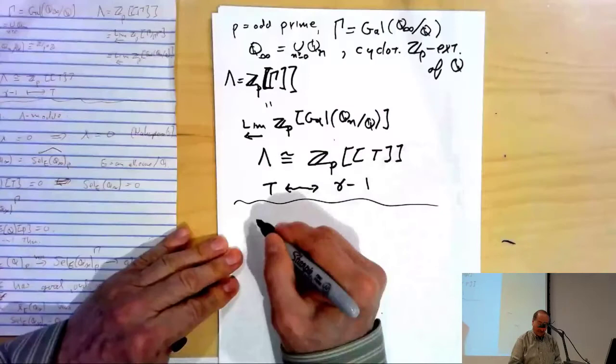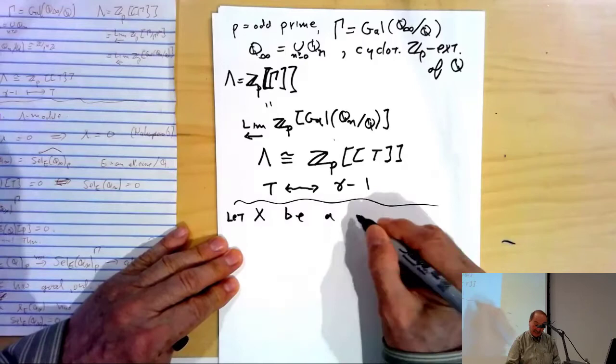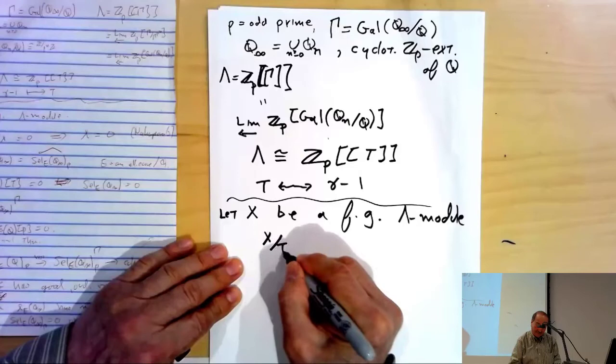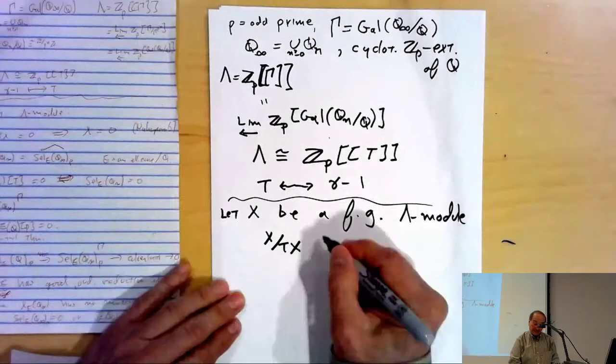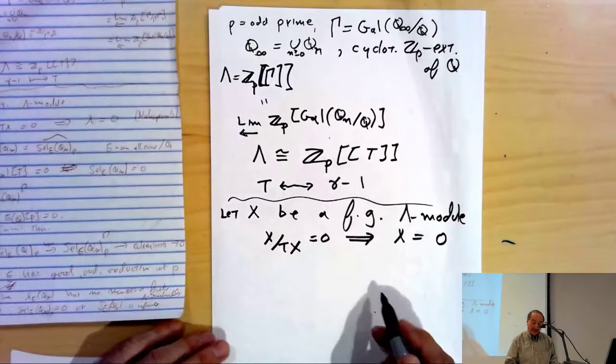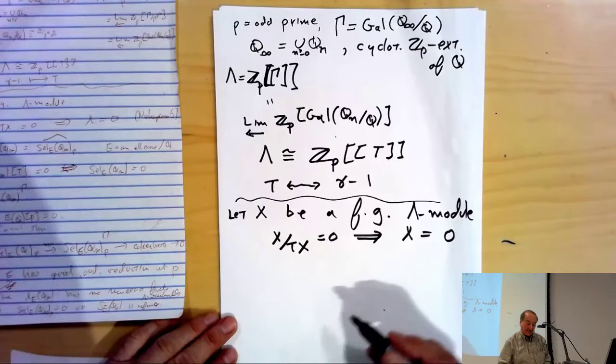With this notation, suppose X is a finitely generated Λ-module. This observation came up probably a number of times in the lectures: if X mod TX is 0, then it follows that X = 0. It's a consequence of Nakayama's lemma. The ring Λ is a local ring and T is in the maximal ideal; the maximal ideal is generated by p and T.